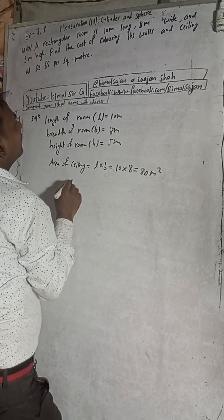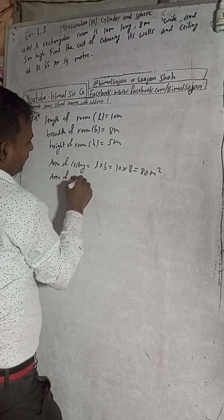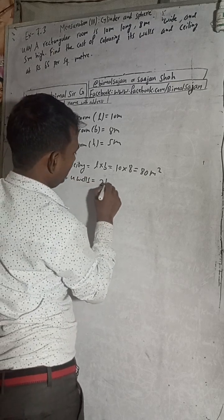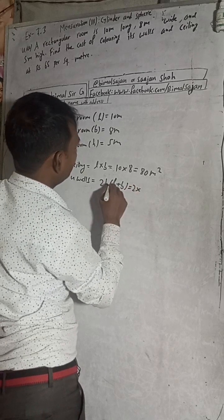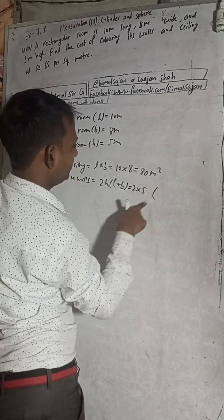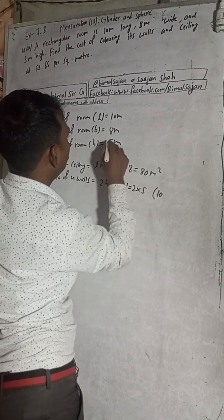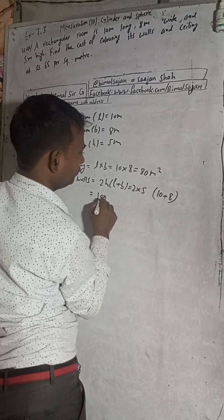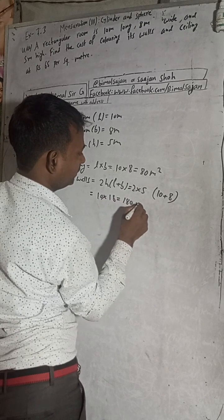Area of 4 walls is equal to 2H into (L plus B). So 2 into H which is 5, into L plus B which is 10 plus 8, that is 18. So this gives 2 into 5 into 18, which equals 180 square meters.